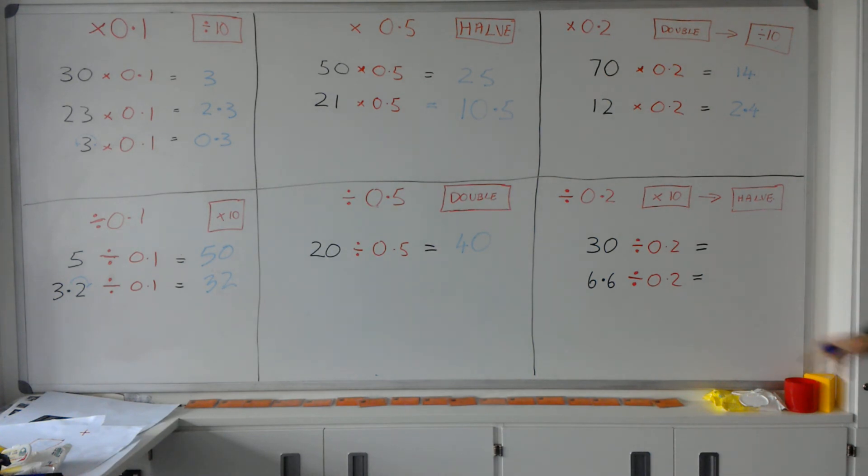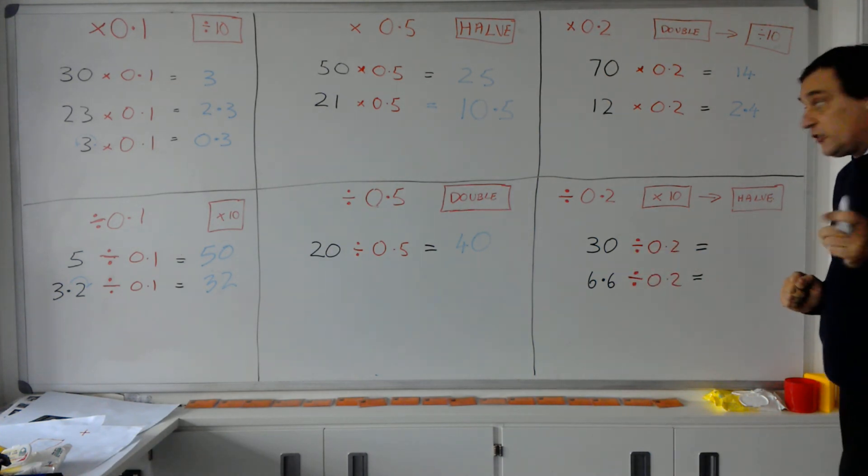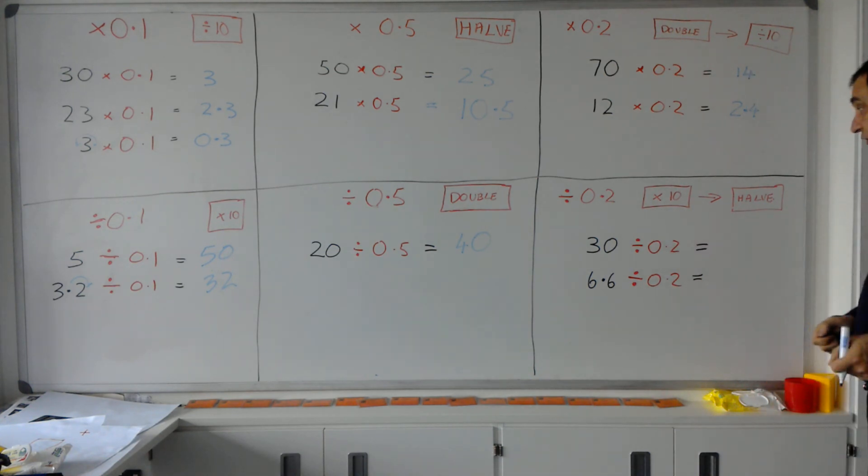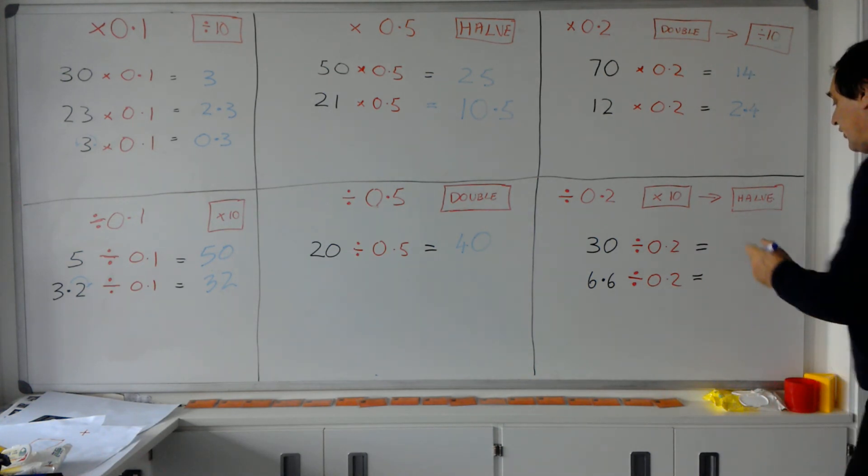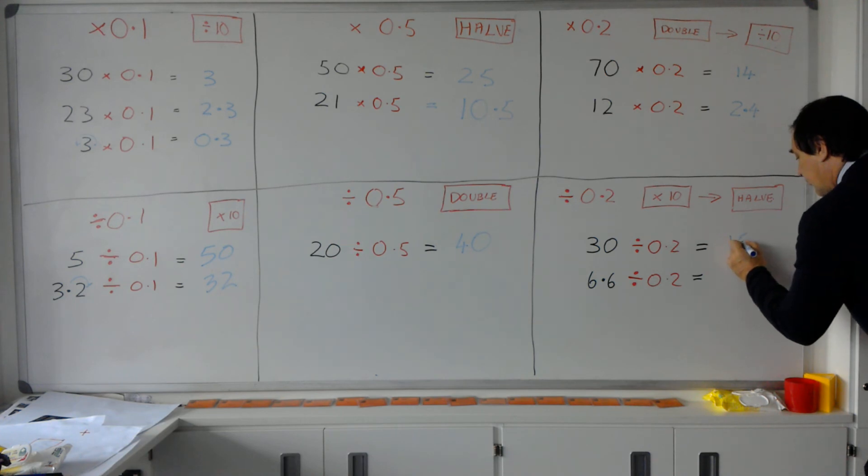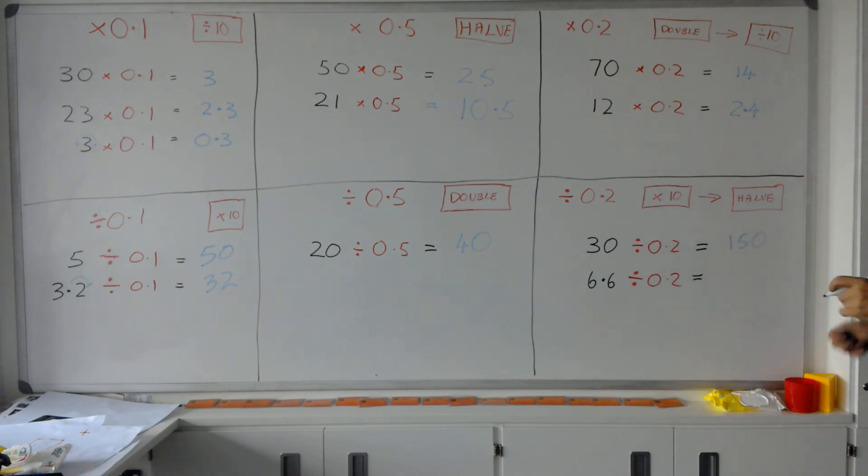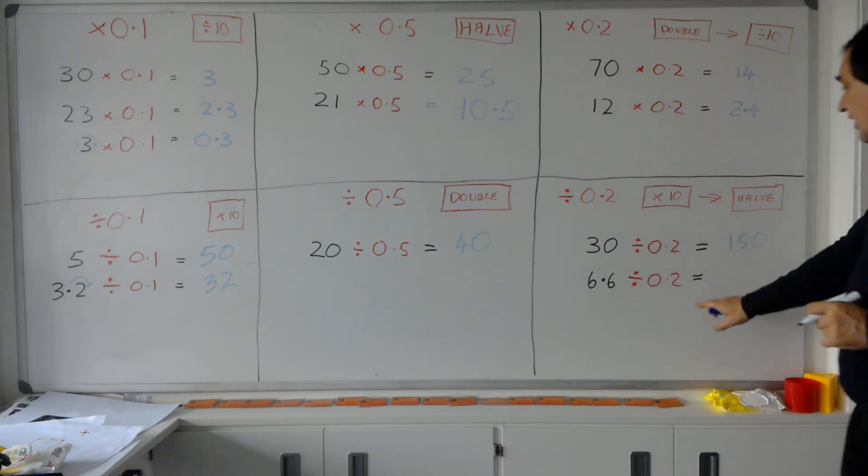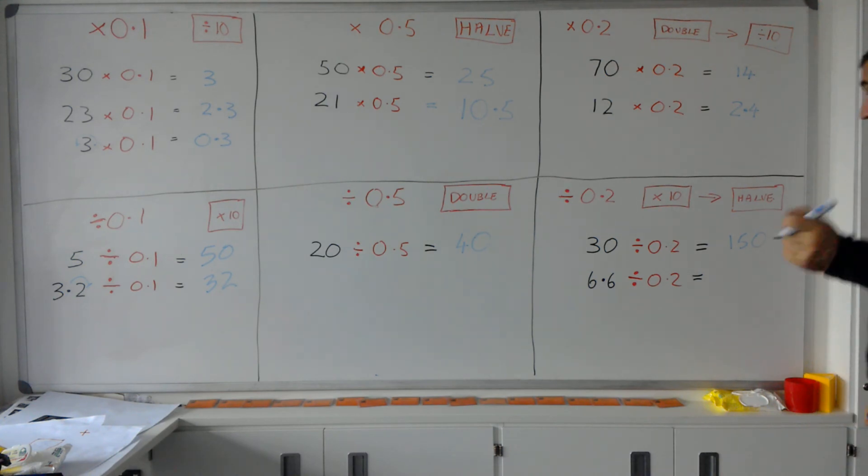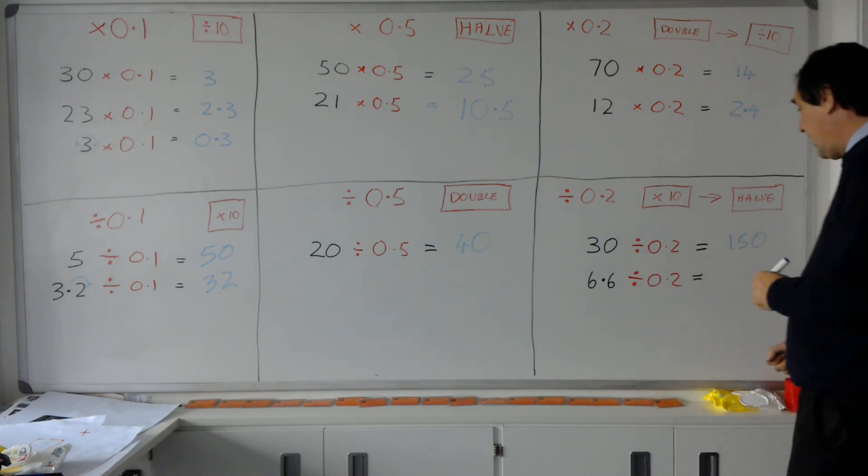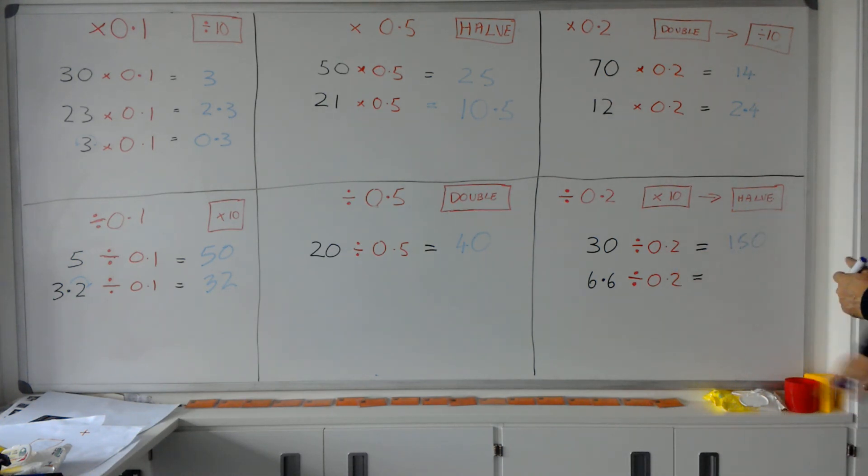So 30 divided by 0.2 means 30 times 10, which is 300. Half the answer gives me 150. And then finally, 6.6 divided by 0.2. Well, 6.6 times 10 is 66, and we half the 66 to give us 33.